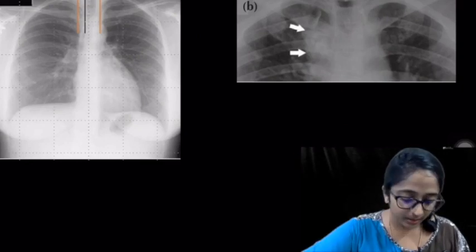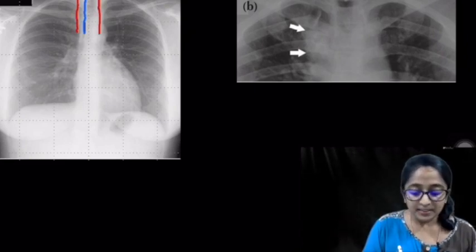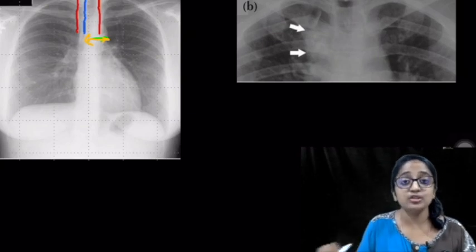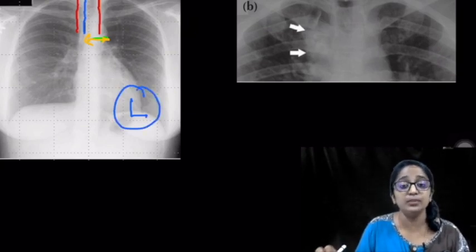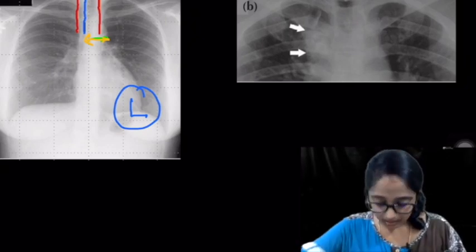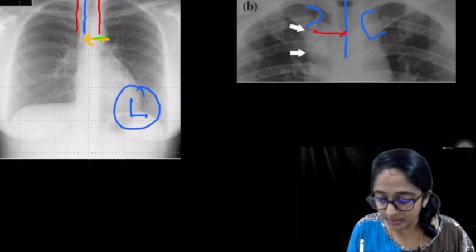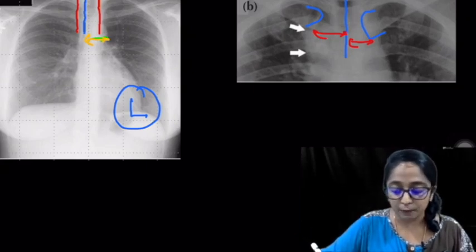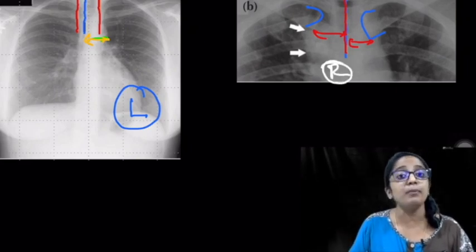In the first example, marking the spinous process line and the medial ends of both clavicles, the medial end of the left clavicle is at a greater distance than the right — so this radiograph is rotated to the left. In another example, the medial end of the right clavicle is at a greater distance from the spinous process than the left — so that radiograph is rotated to the right.